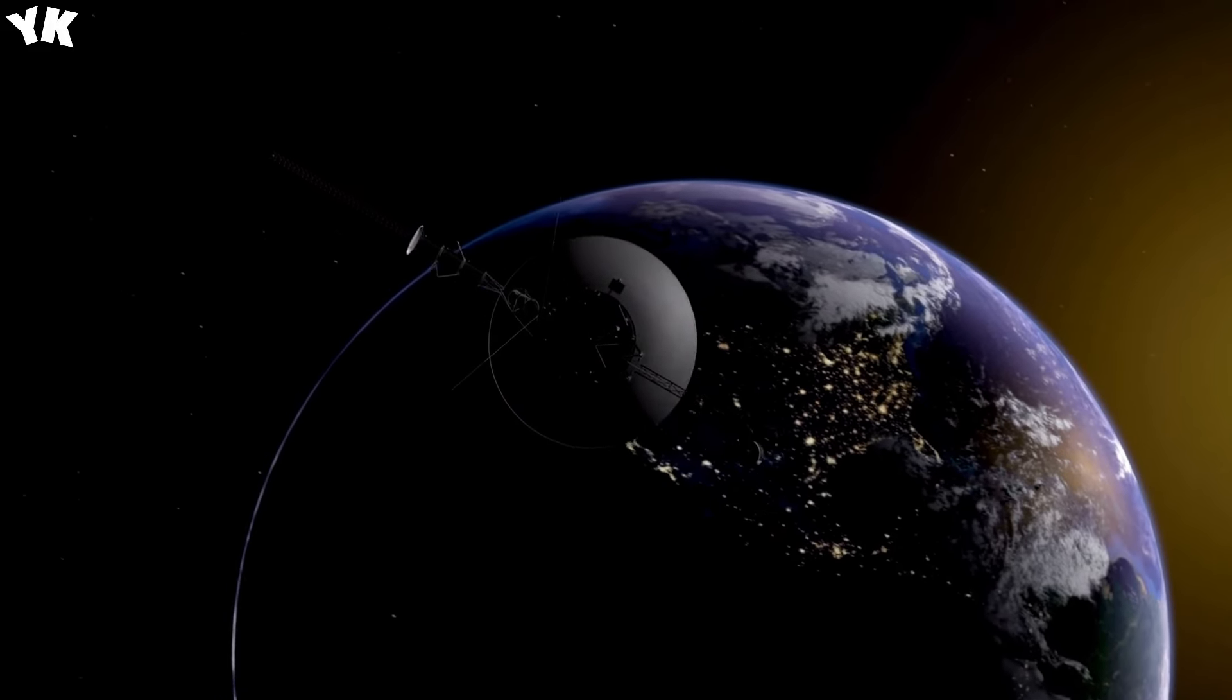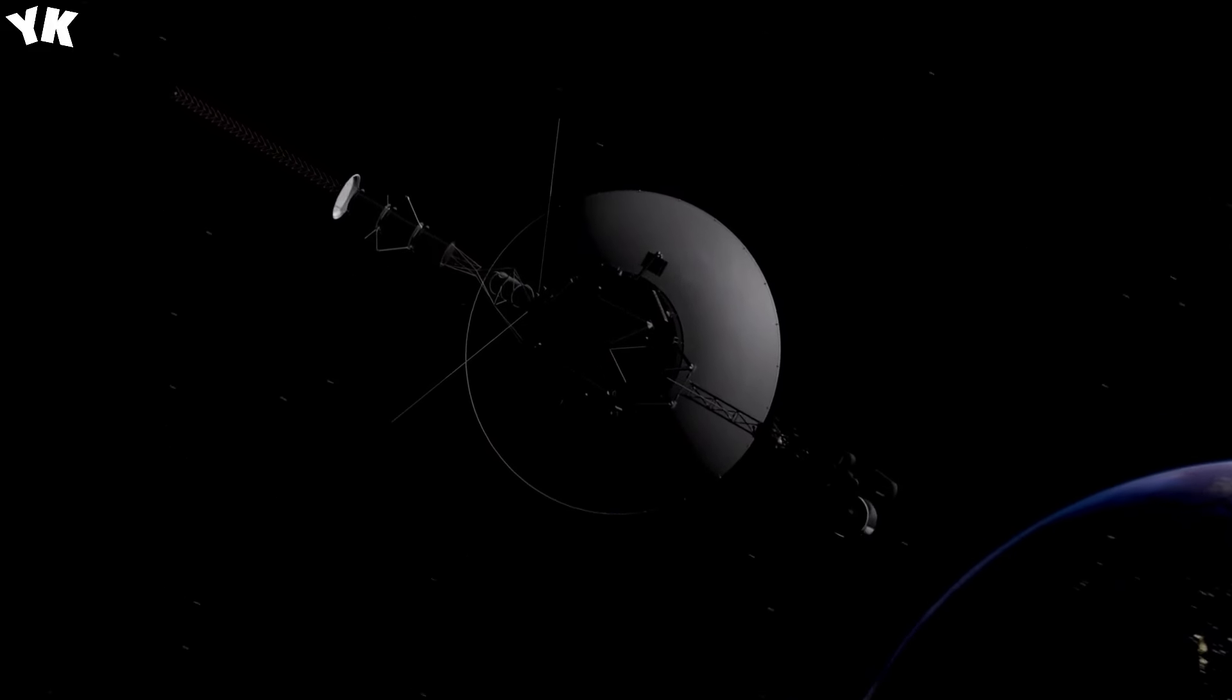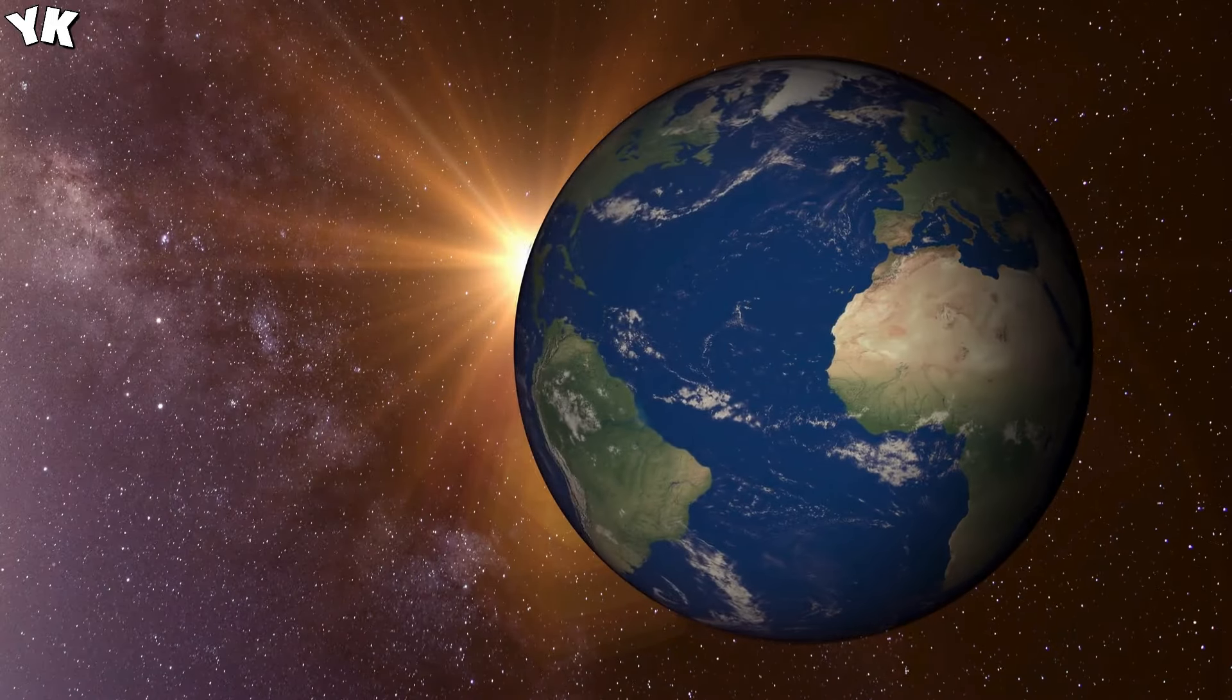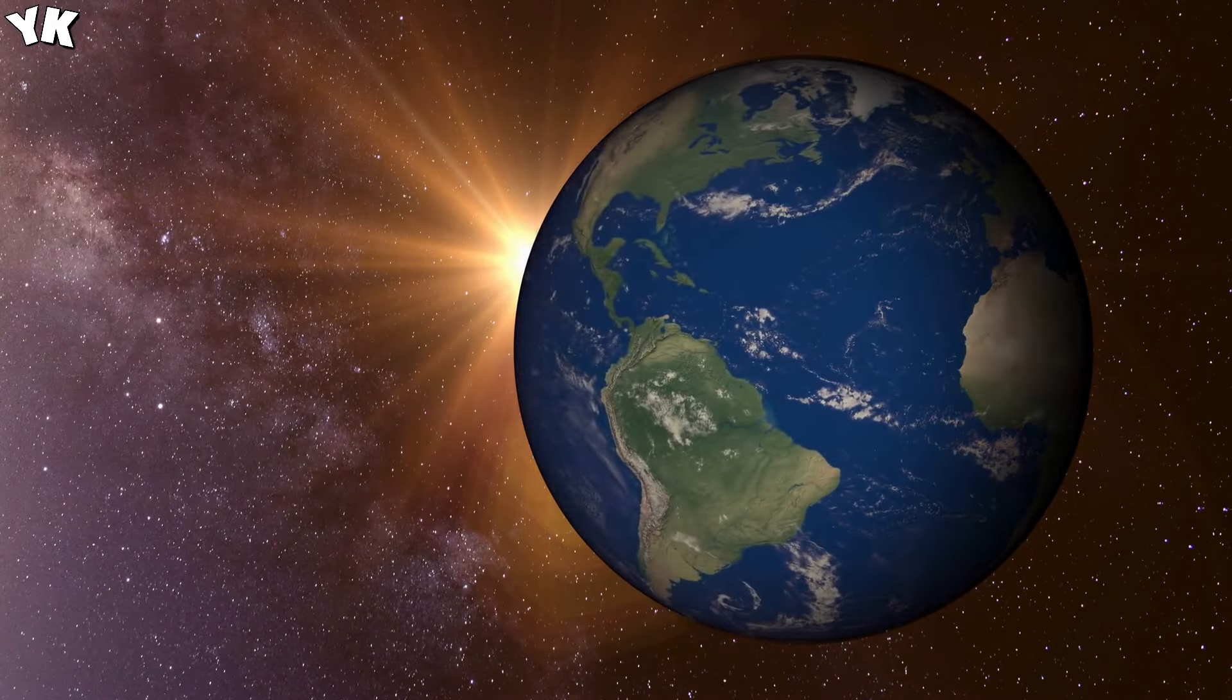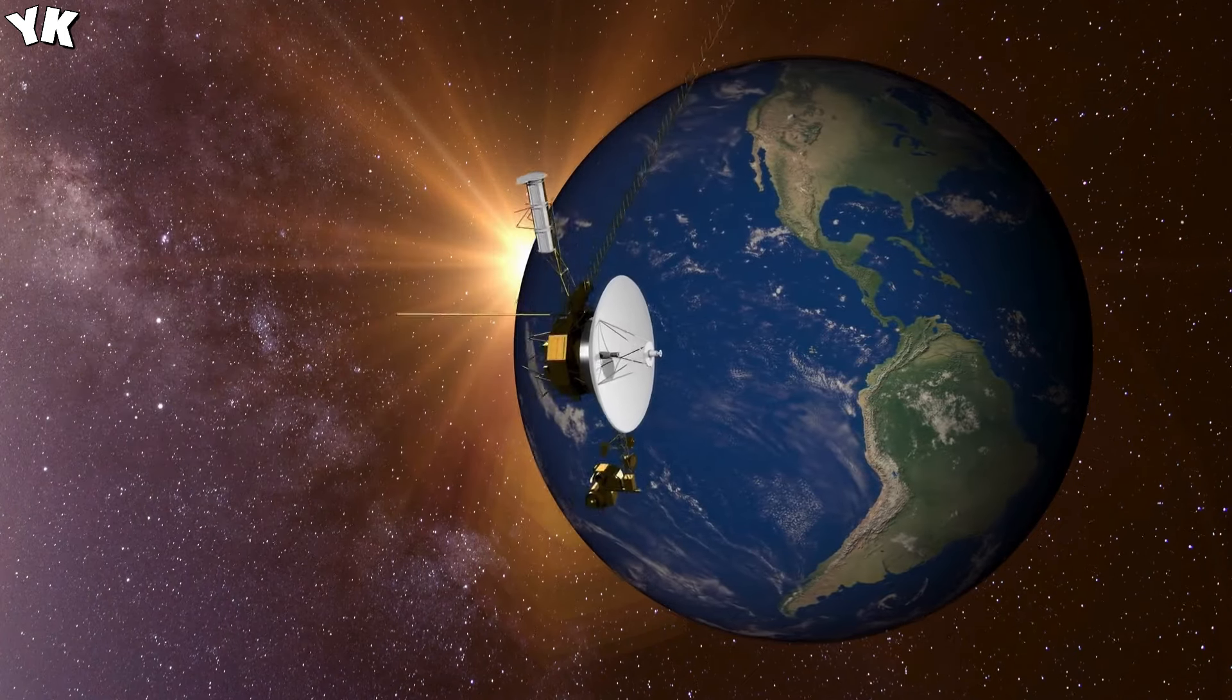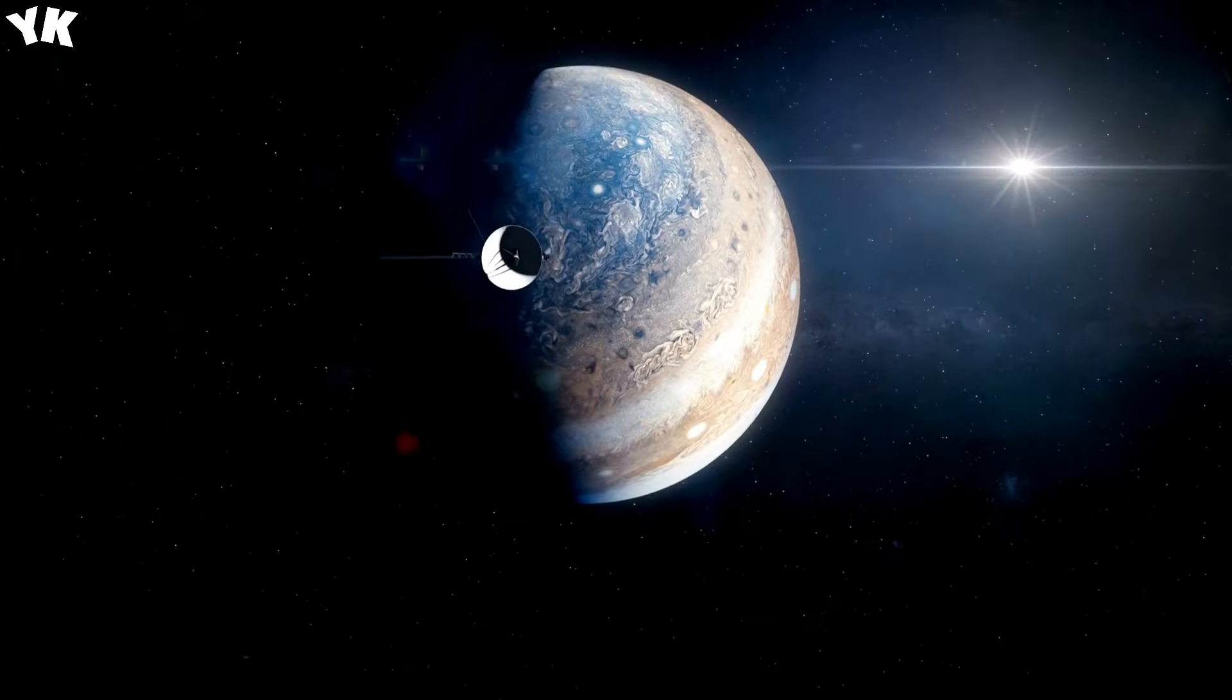Since Voyager 1 is nuclear-powered, its electrical power weakens each day. In 1990, in order to save power, engineers turned off the spacecraft's camera after Voyager took the famous pale blue dot image, which showed Earth as a tiny blue pixel against the darkness of space.